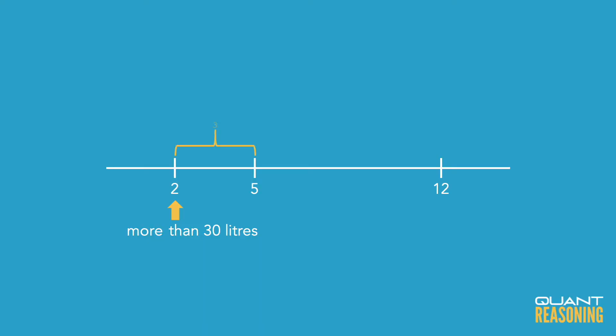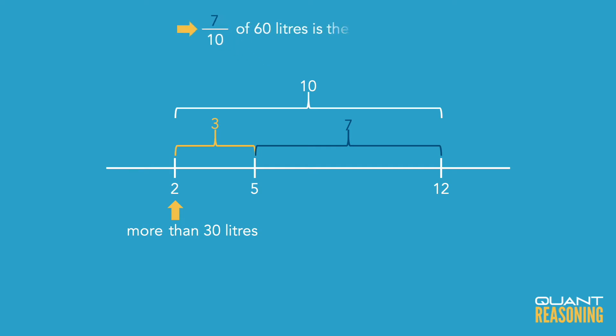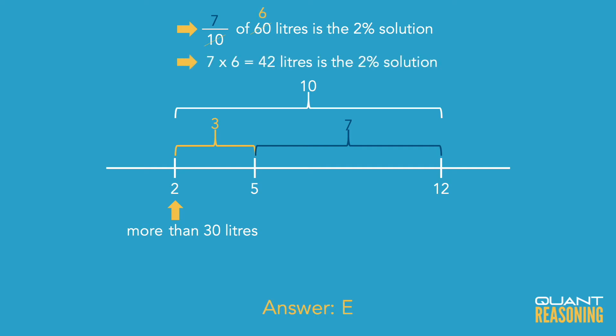So that means the 2% outweighs the 12% by a ratio of 7 to 3, for a total of 10 ratio units. Of those total 10 ratio units, 7 are the 2%, so 7 tenths of 60 liters is the answer. Reducing: 7 times 6 is 42, and the correct answer is E.